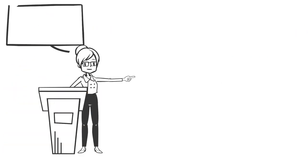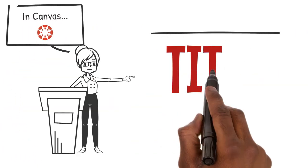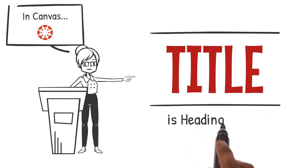In Canvas, the page title is always Heading Level 1, which means when you create a heading level in the Rich Content Editor, you always start with Heading Level 2.